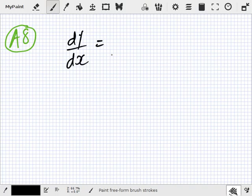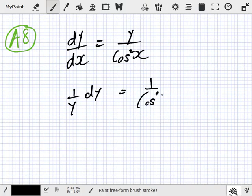dy/dx equals y over cos squared x. Cos squared x, like this, yeah? Right, so 1 over y dy equals 1 over cos squared x dx and we integrate.